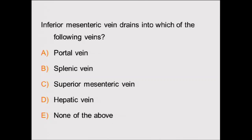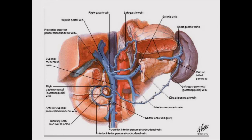The inferior mesenteric vein drains into which of the following structures? A: portal vein. B: splenic vein. C: superior mesenteric vein. D: hepatic vein. E: none of the above. The answer is B, the splenic vein. This question tests anatomical knowledge. Mesenteric vein thrombosis is common on your exam. The IMV joins into the splenic vein. The confluence of the splenic vein joins the SMV, which forms the portal vein.